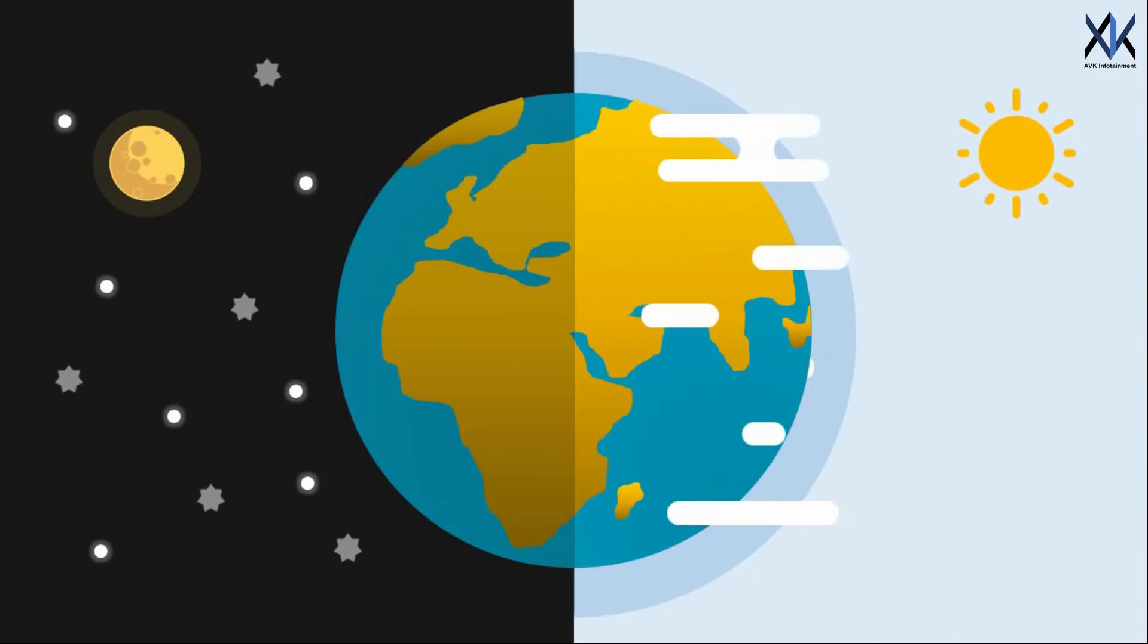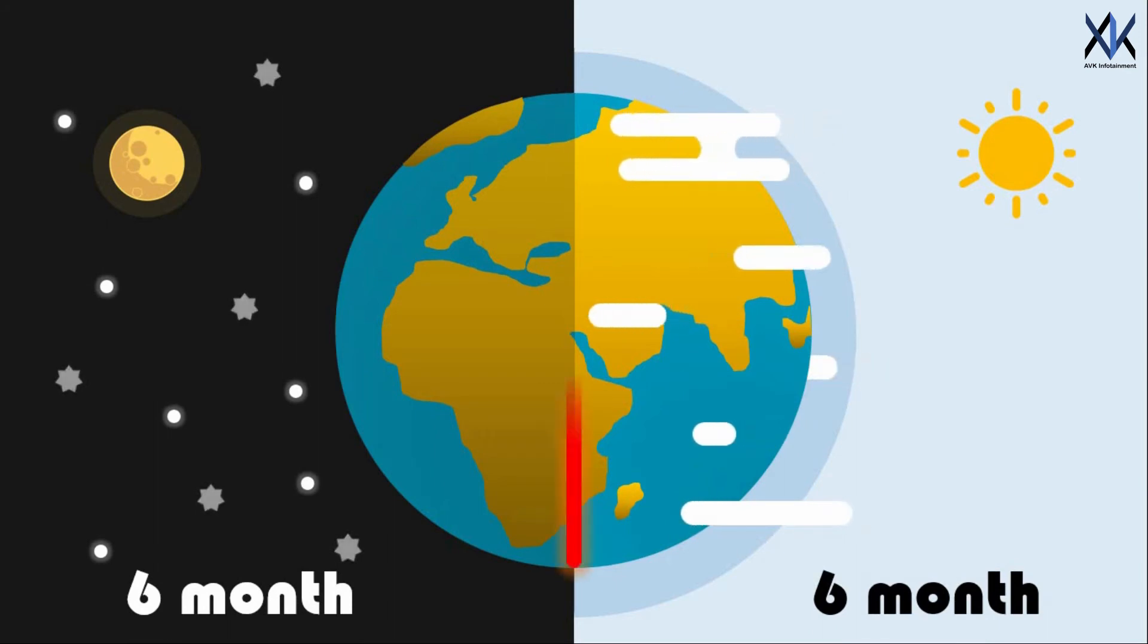According to NASA, if Earth stopped turning then there would be six month day and six month night. Humanity can survive only at the border of these two regions but it is very unlikely that humanity can survive the previously stated catastrophes.